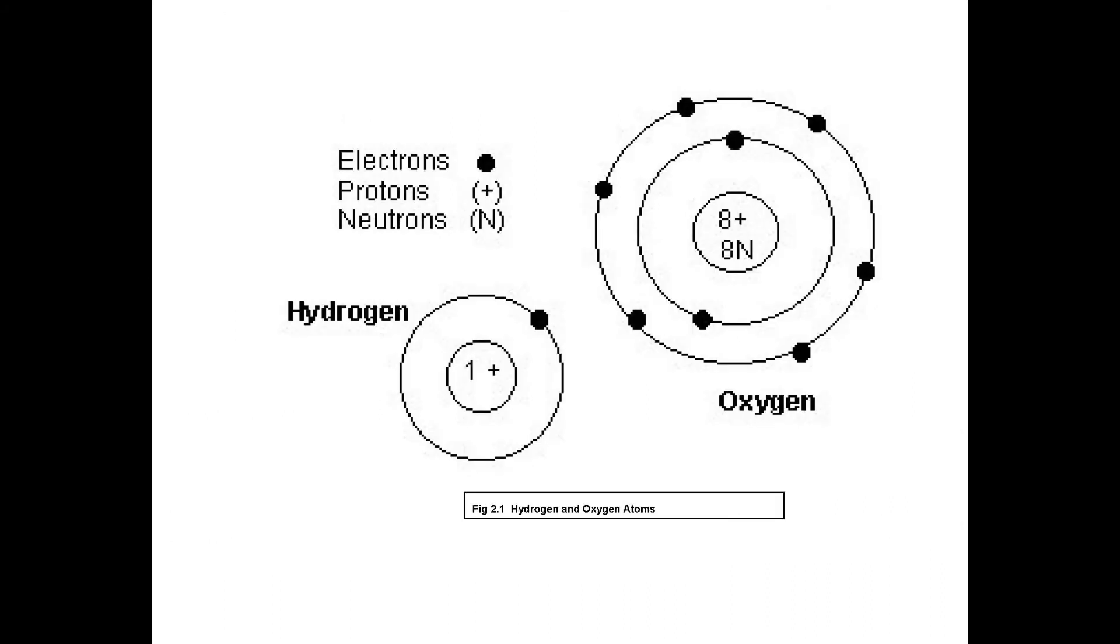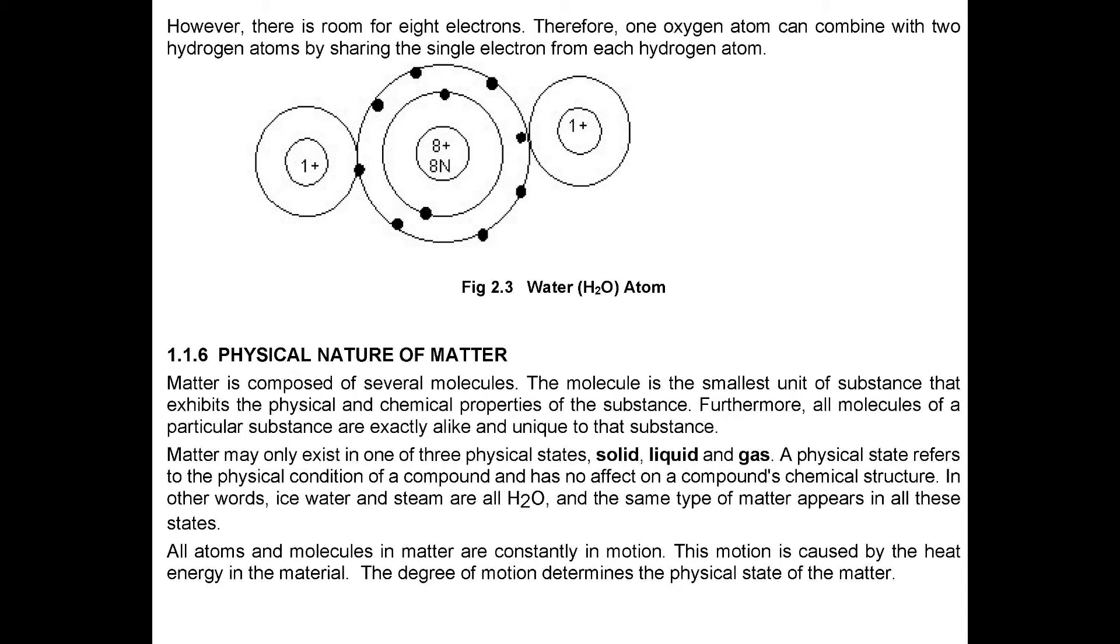When atoms bond together to form a molecule they share electrons. In the example of H2O, the oxygen atom has six electrons in the outer, or valence, shell. However, there is room for eight electrons. Therefore, one oxygen atom can combine with two hydrogen atoms by sharing the single electron from each hydrogen atom.